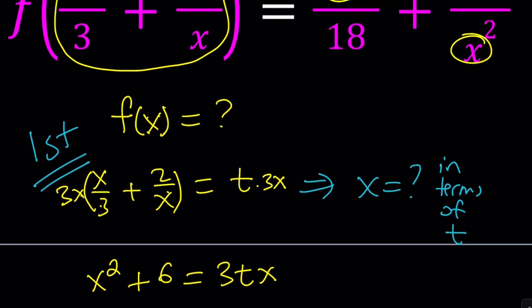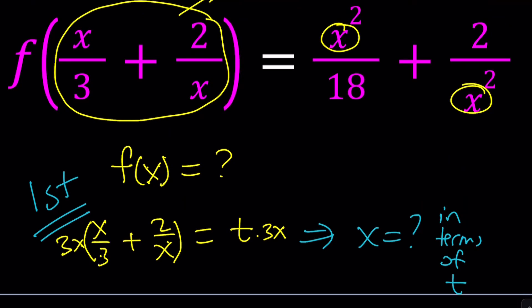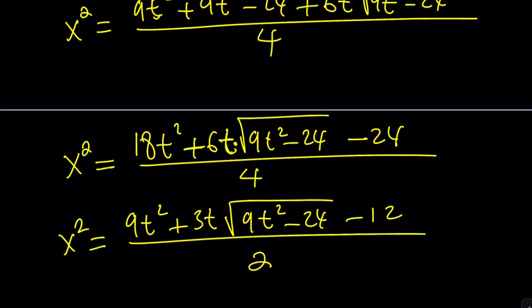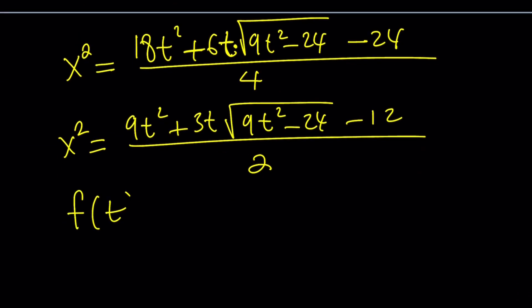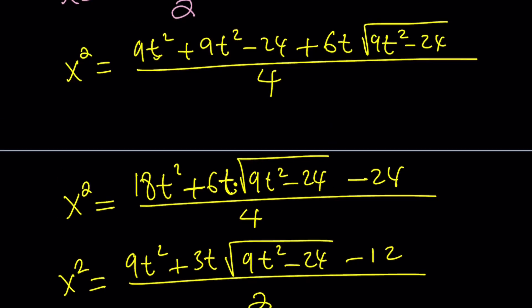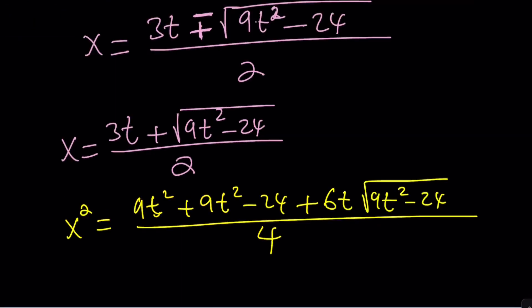Let's go ahead and rewrite this problem with the t on the left and the x expression on the left, on the right. Right, so we have f of t equals, what did I have on the right-hand side? x squared over 18 plus 2 over x squared, right? Was that right? Okay, I think so. Cool.